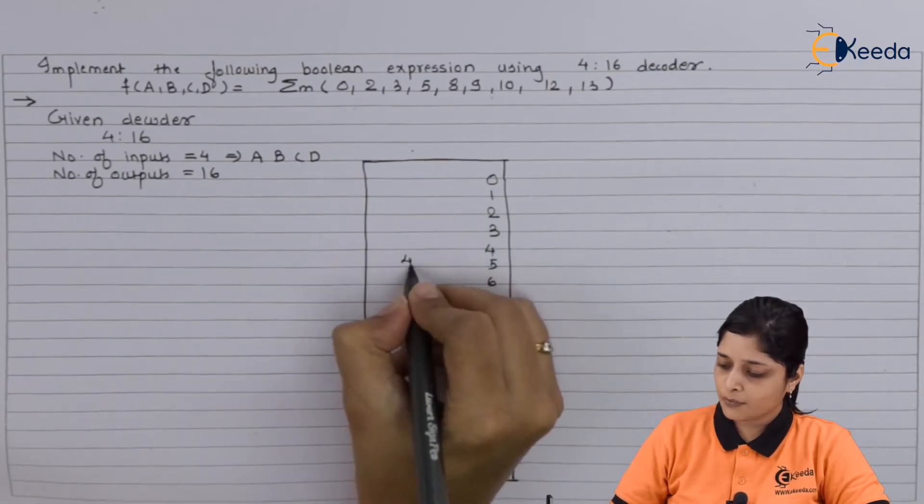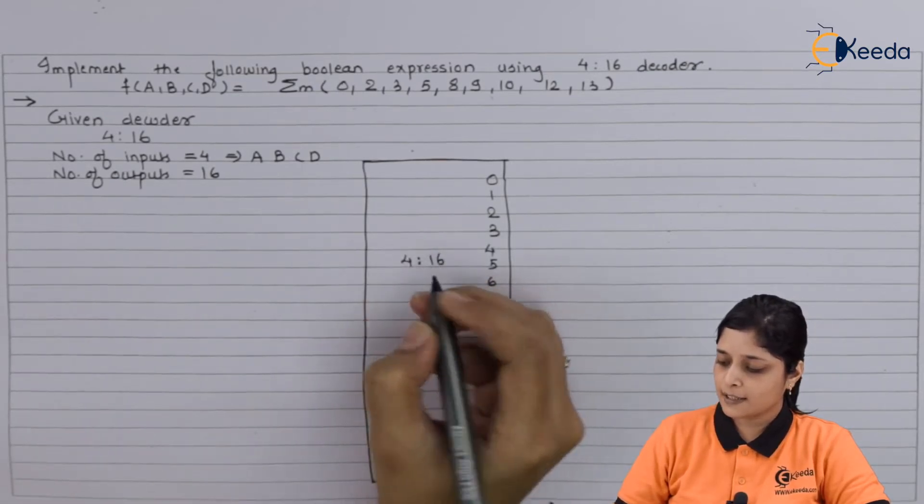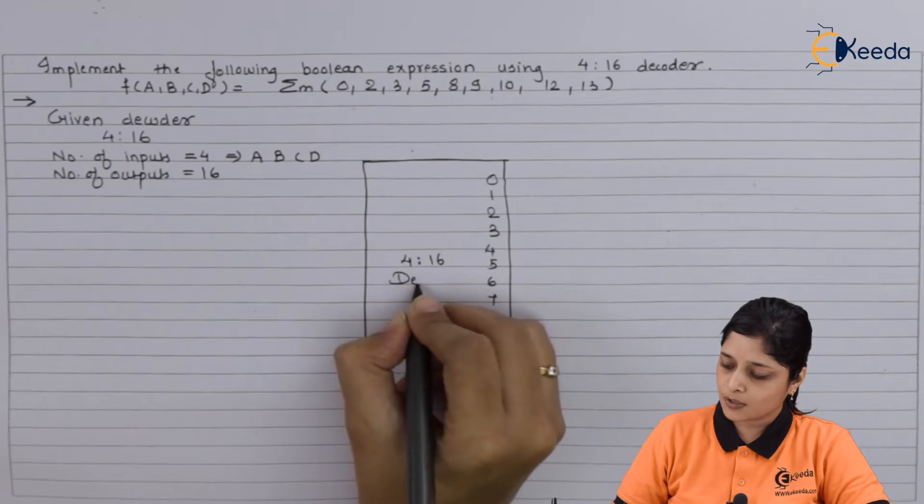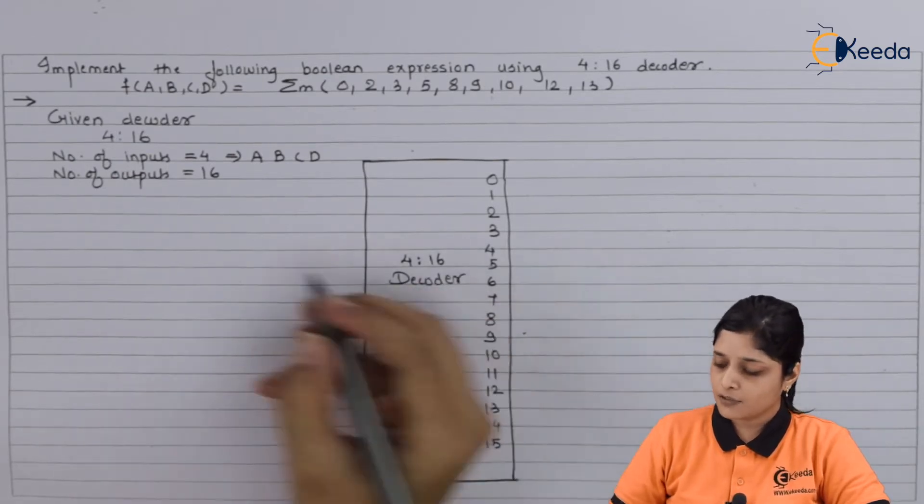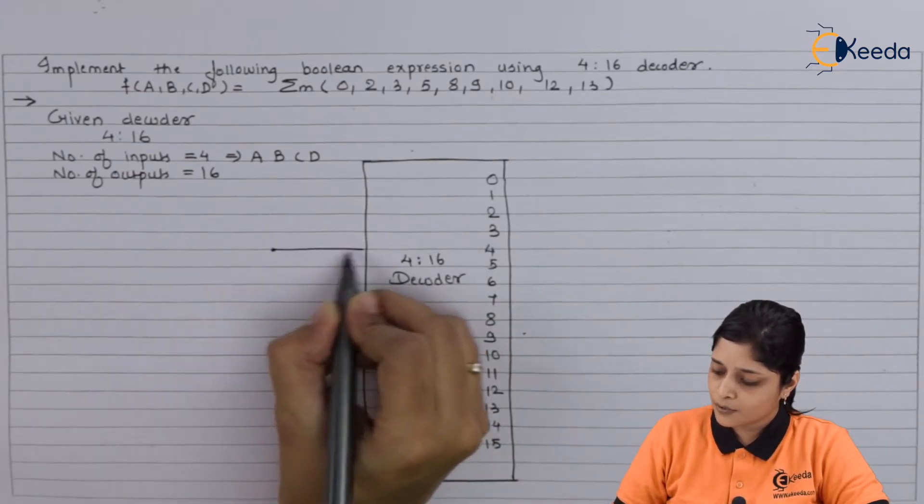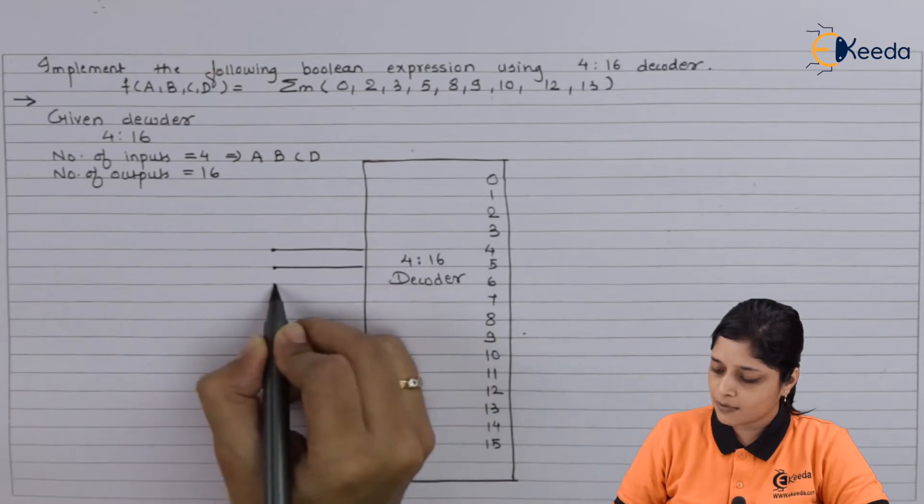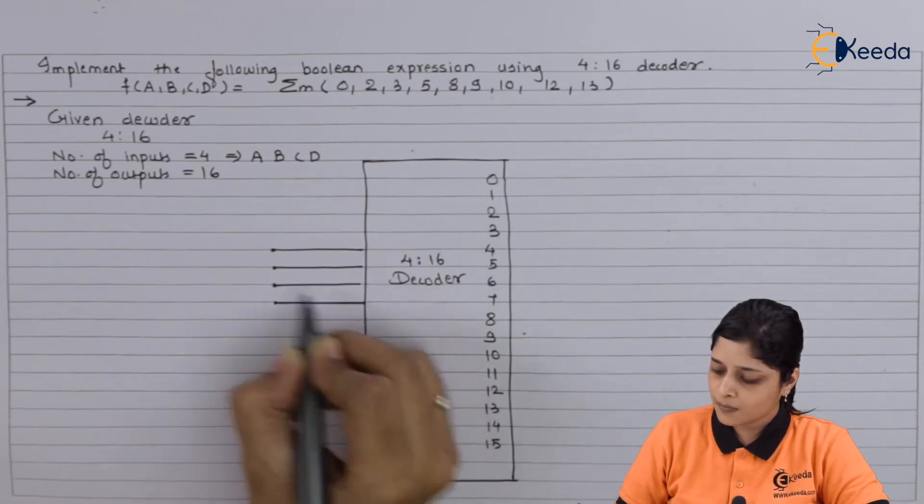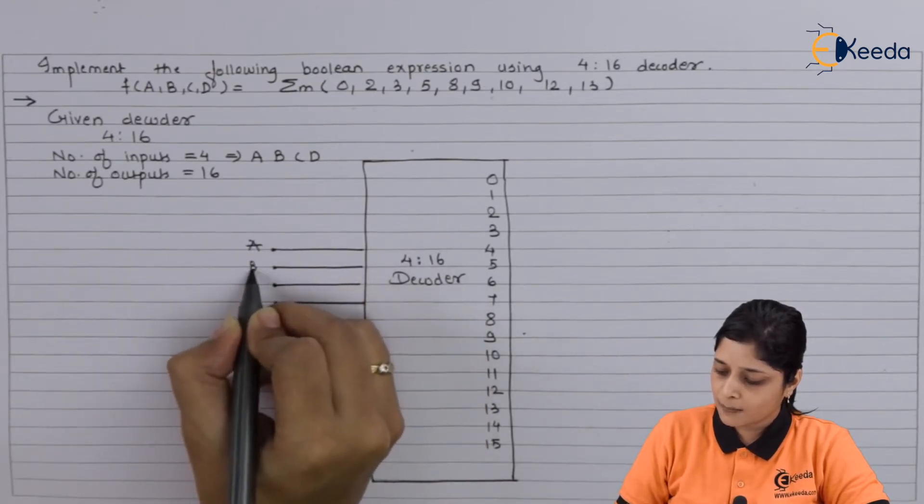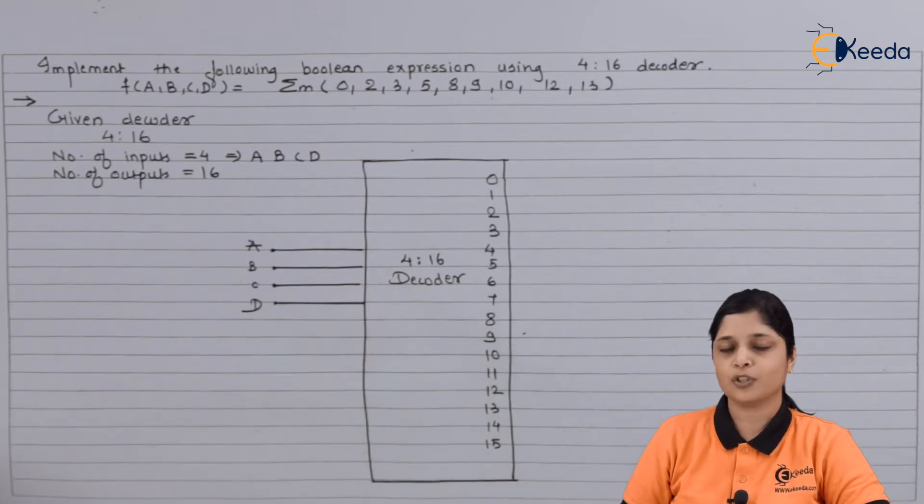After that, you have to show that it has 4 inputs. It is given in the example, so that's why we will write here a, b, c, and d are the 4 inputs.